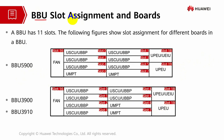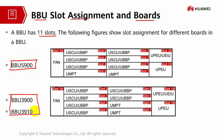Next, we're going to go through BBU slot assignment and the boards. A BBU has 11 slots. The following figures show different boards in a BBU — the first is the 5900 series and the second is the 3900 series together with the 3910 series. Comparing the slot assignment: the fan has a fixed slot, and the power supply unit is also configured in a fixed slot. Slot 19 is dedicated for UPEU, the power supply unit, and slot 16 is dedicated for the fan unit.